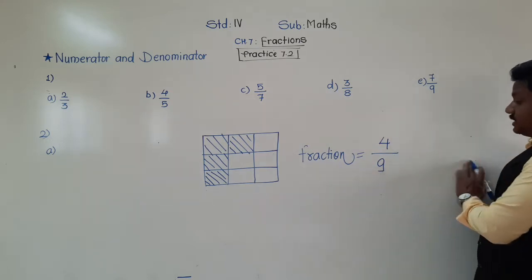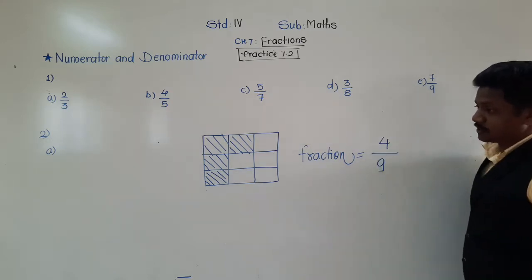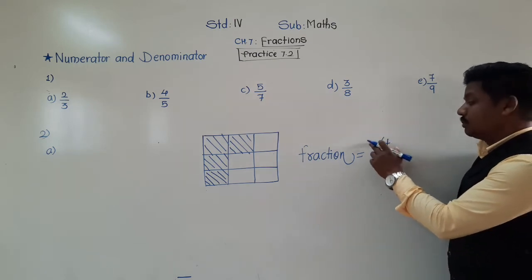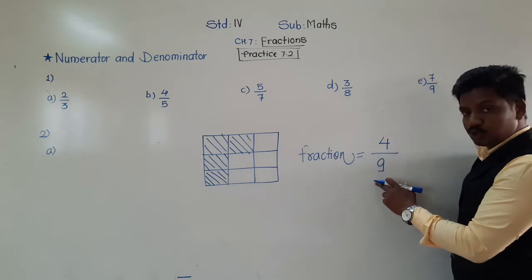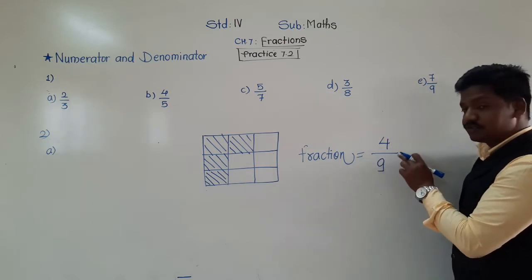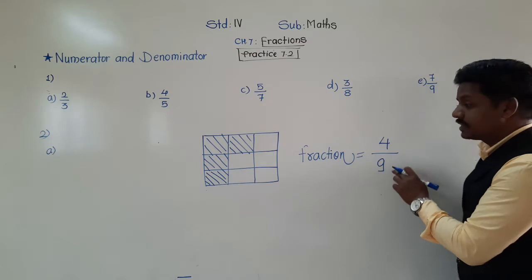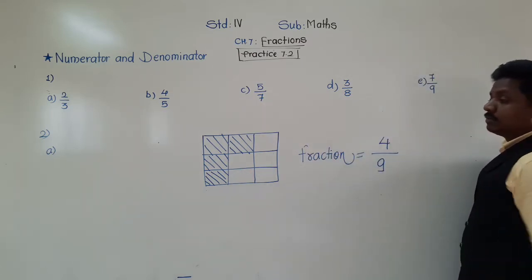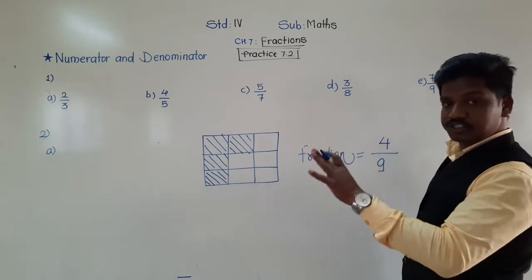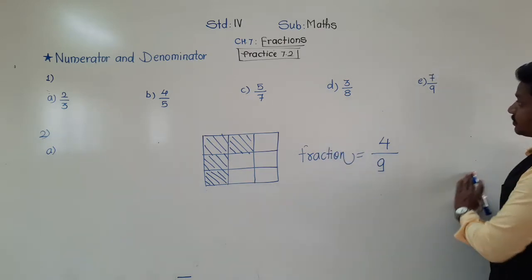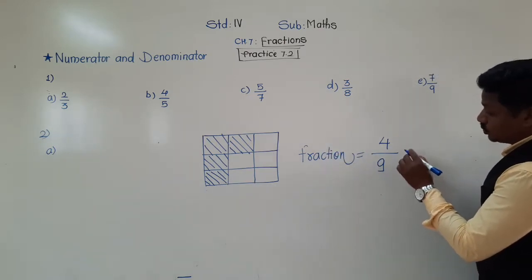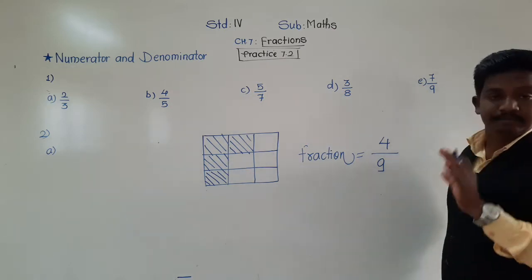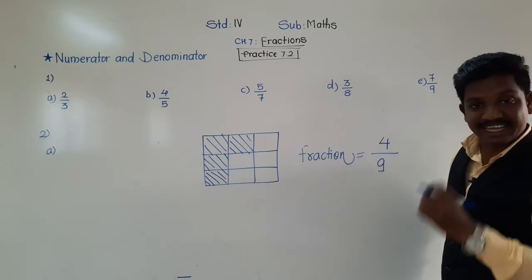Now, if you observe this fraction, there are two numbers: the number above the bar and the number below the bar. We know that the number below the bar represents total equal parts, whereas the number above the bar represents shaded or unshaded parts. That we saw yesterday. So, the number above the bar and the number below the bar each have their own name.